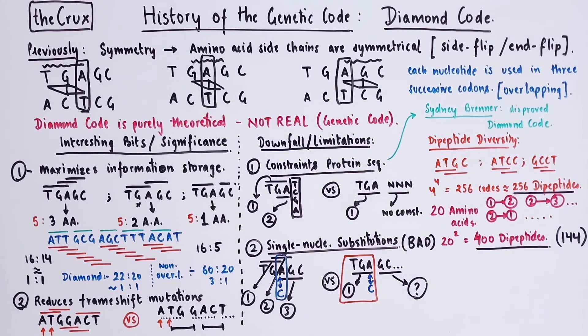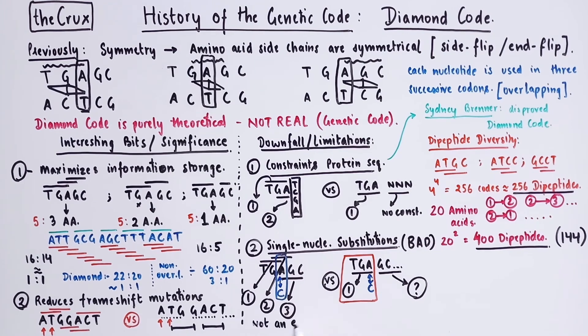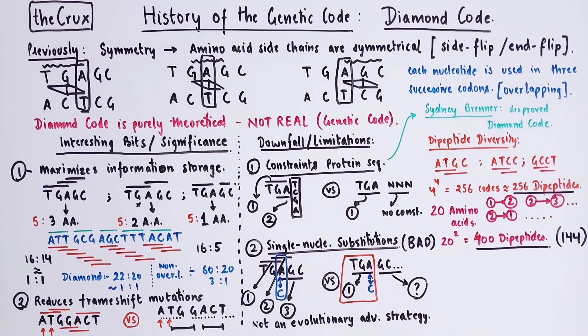And evolutionarily speaking, because frameshifts are under strong purifying selection, you usually see more of substitutions in nature. And in this respect, having a diamond code is not an advantageous strategy. So these are some of the major limitations that were seen in the diamond code in the 1950s. Now comparing with what we know today about the genetic code, what other limitations of diamond code can you think of? Leave your answers in the comment section below. And with this we wrap up our discussion about the diamond code.